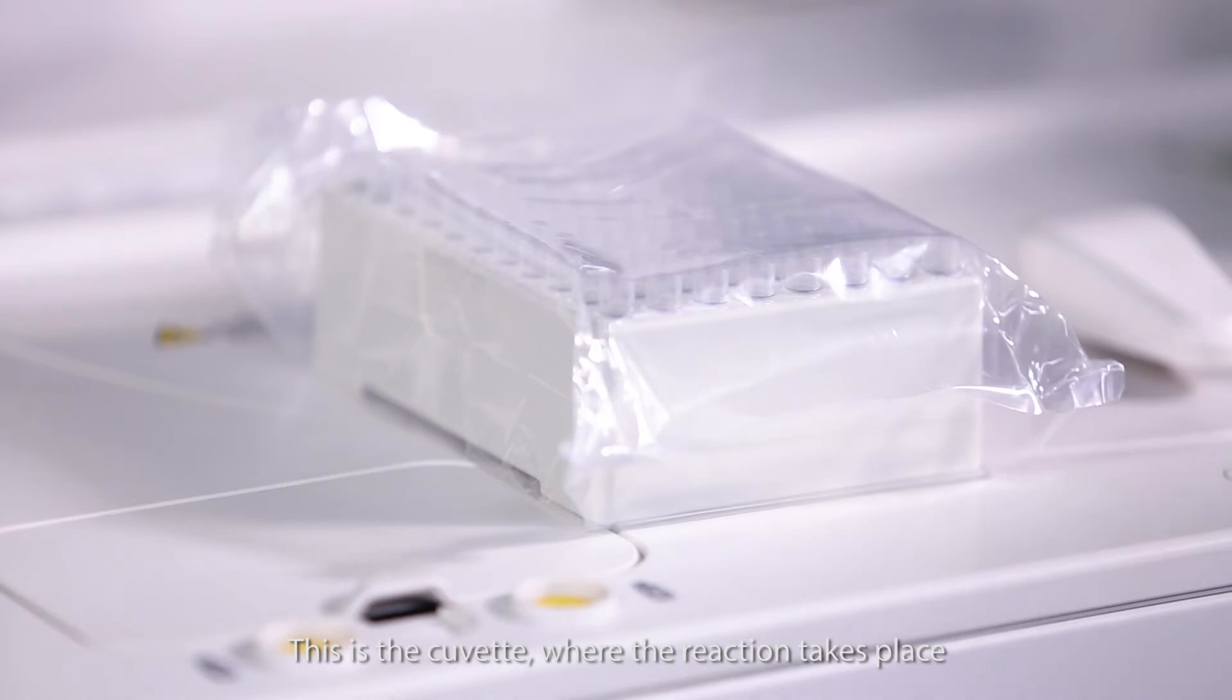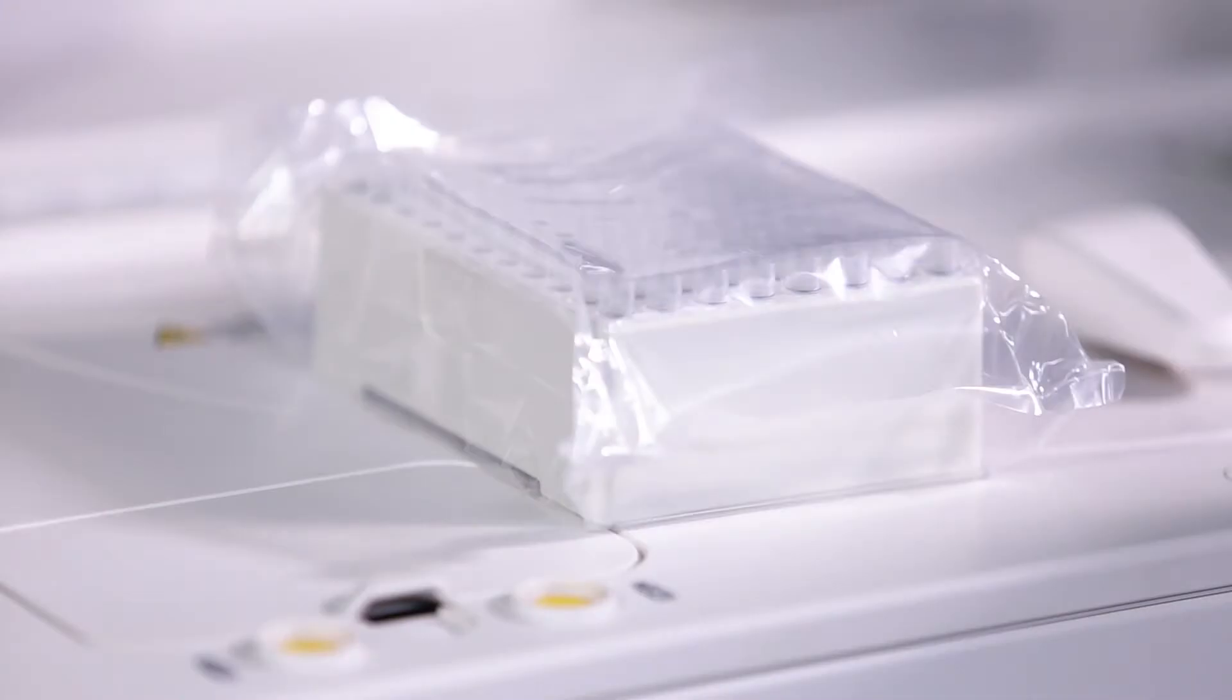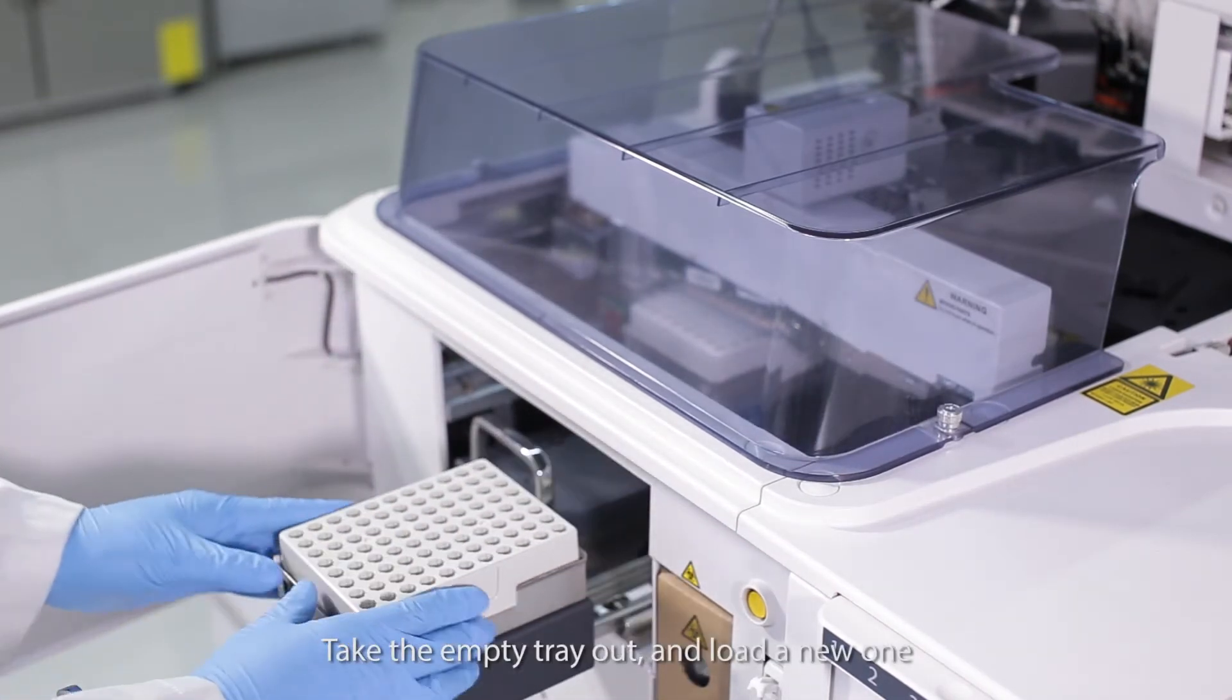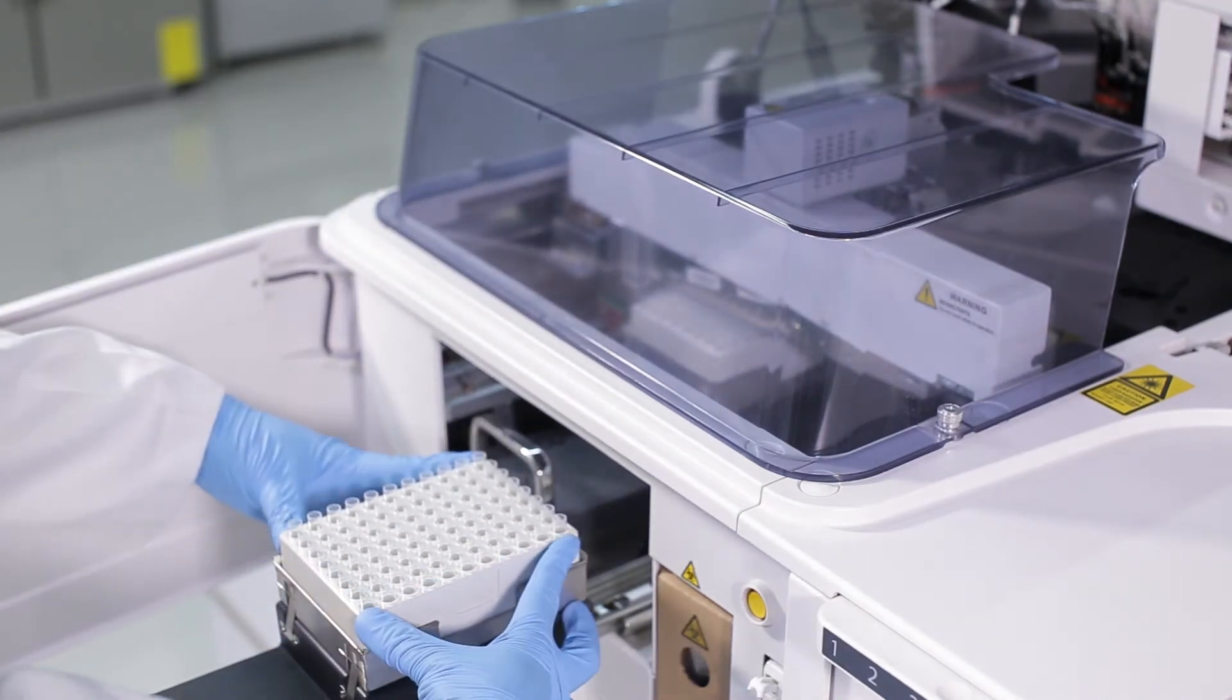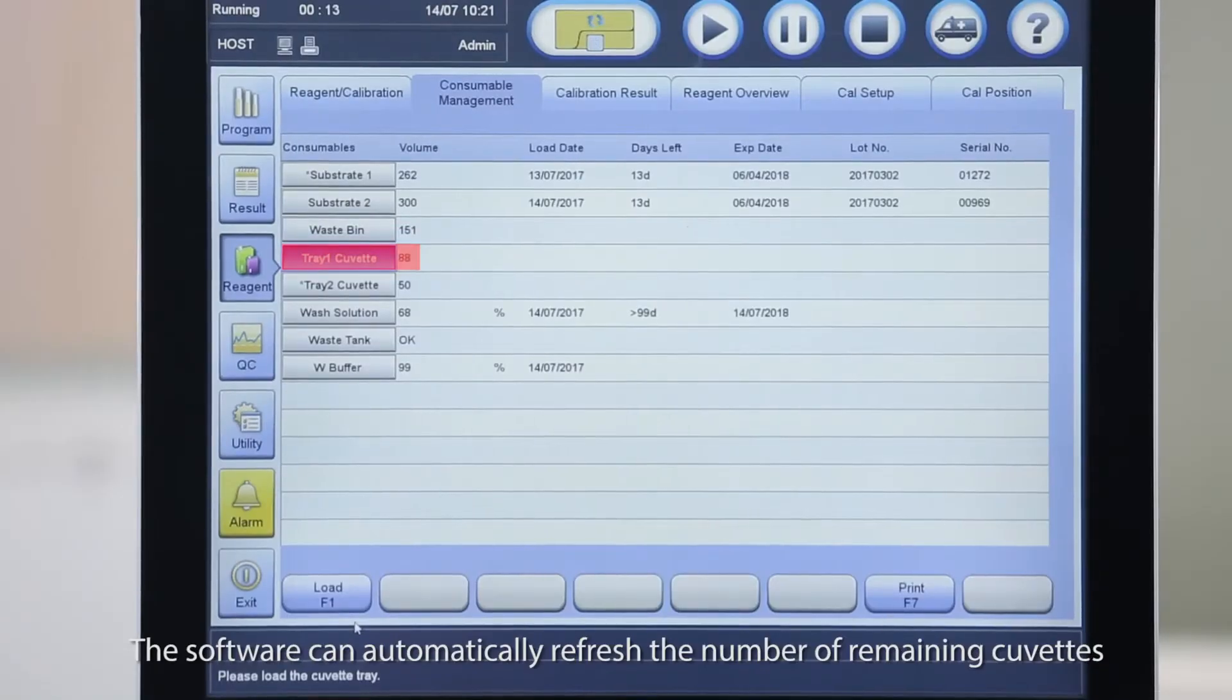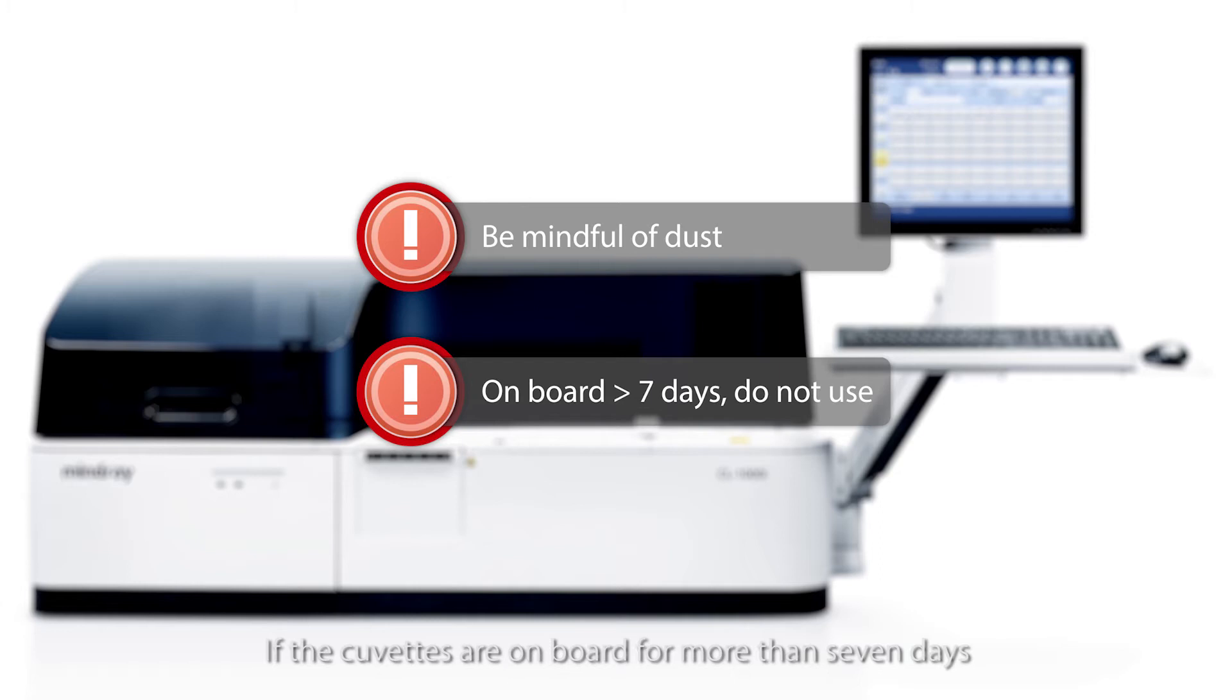This is the cuvette where the reaction takes place. Two trays of cuvettes can be loaded on the system. Cuvette inventory can be displayed by the software or the indication light. Open the package by the notch. Do not drop or contaminate the cuvettes. Open the door and pull out the tray rack. Take the empty tray out and load a new one. Hold the side of the tray to avoid contamination. Press the four corners to make sure the tray touches the bottom of the holder. Push the tray rack back in and close the door. The software can automatically refresh the number of remaining cuvettes. Be mindful of dust in case it influences the test results. If the cuvettes are on board for more than seven days, please do not use them.